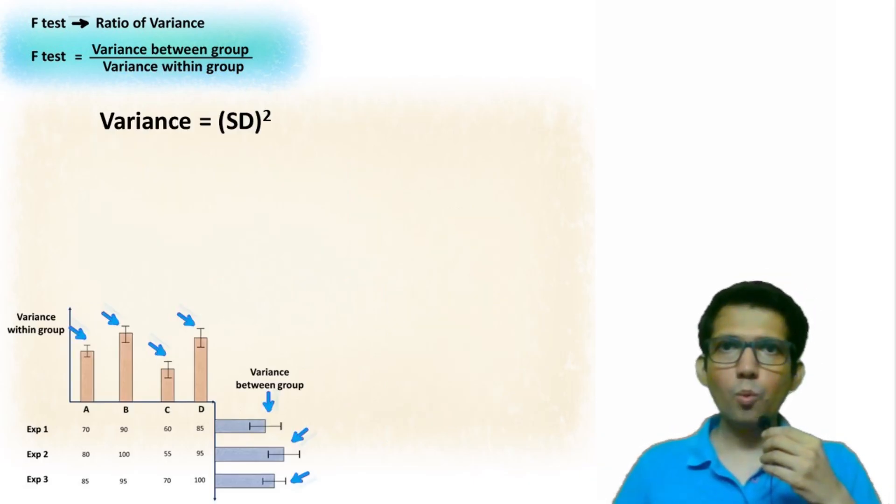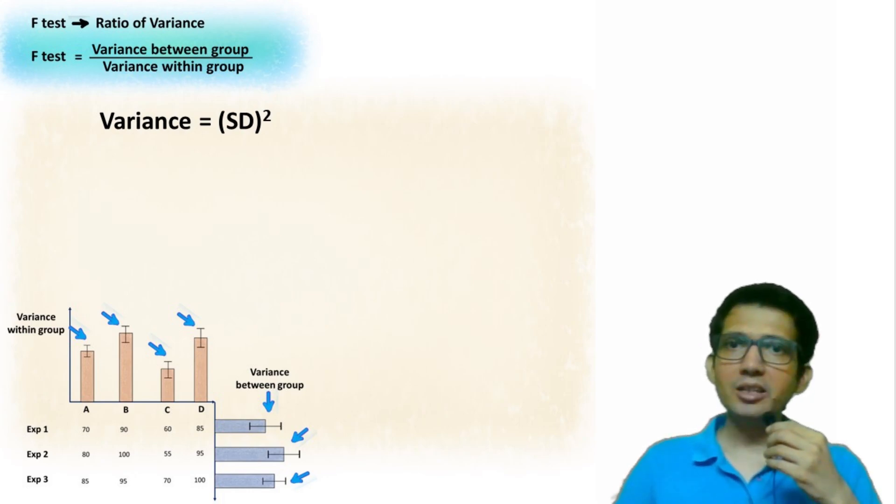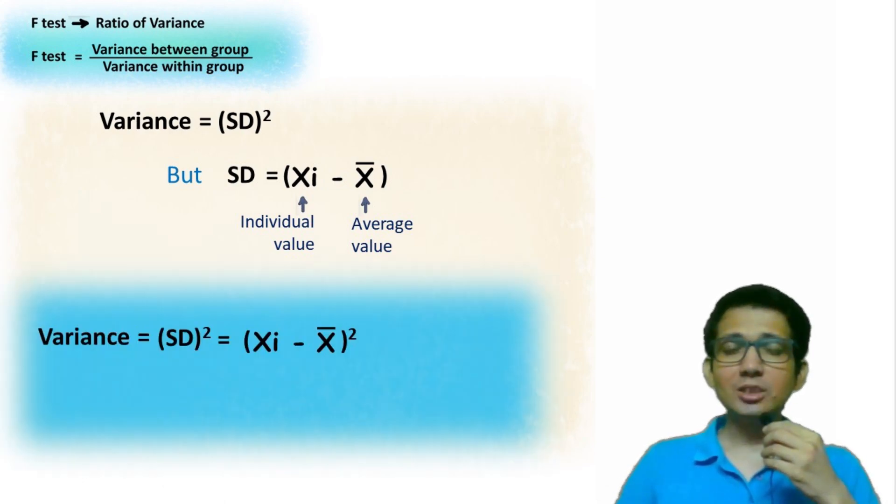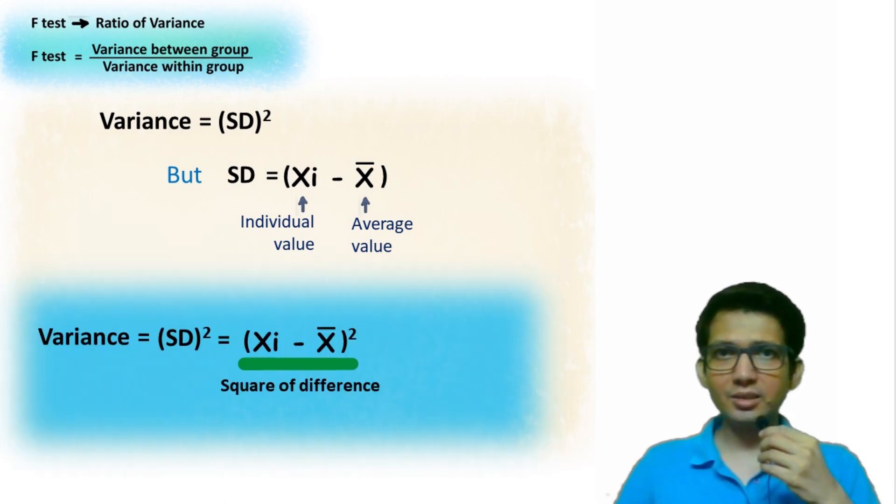Variance is the square of standard deviation. And standard deviation means how far the individual values are with respect to the average value. You can also say it's the square of difference - the difference of each value with respect to average.